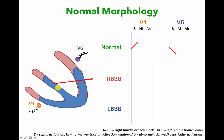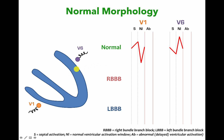Next, there's activation of the right and left ventricles relatively simultaneously. Since the left ventricle is a much thicker ventricle, the mean electrical axis will point towards the left ventricle and away from the right ventricle. V1 sees a negative net vector, so you get an S wave in the normal EKG in V1. But V6 sees a positive net vector, and you get an R wave. When the entire ventricle is depolarized, there's electrical silence — no electrical gradient — and the EKG returns to baseline. So in V1 you get a small R wave and a deep S wave, and in V6 you get a small Q wave, which we call a septal Q wave, and a relatively tall R wave.